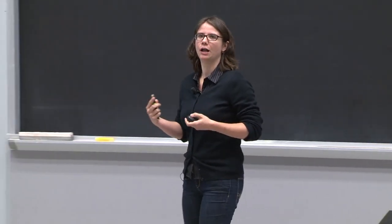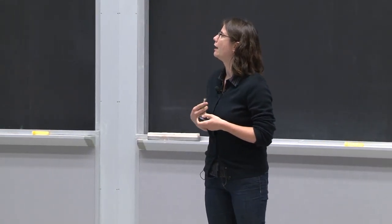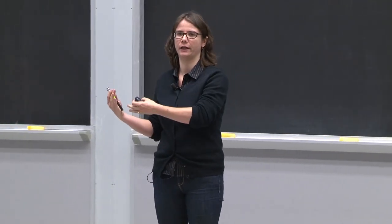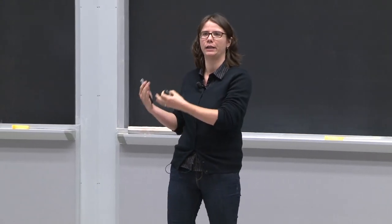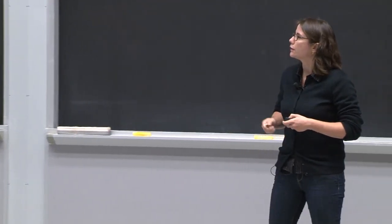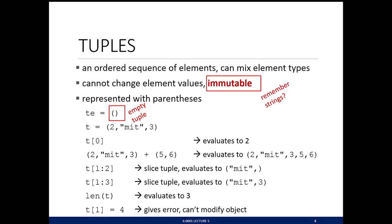Tuples are immutable. We talked about this word when we discussed strings — once you create a tuple object, you can't modify it, just like when you created a string object, you were not allowed to modify it. The way we create tuples is with open and close parentheses. This shouldn't be confused with a function call. For a function call, you'd have something right before the parentheses. This is just how we represent a tuple.